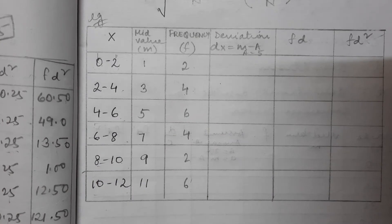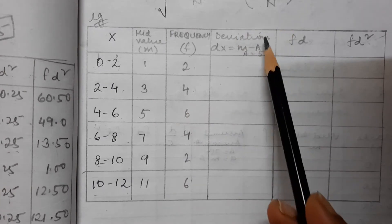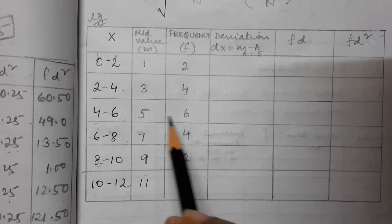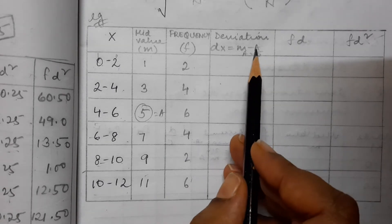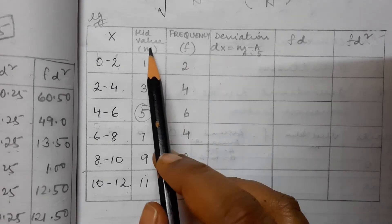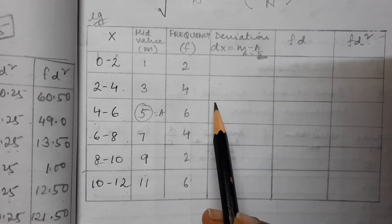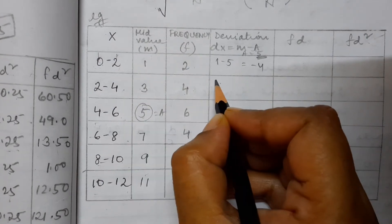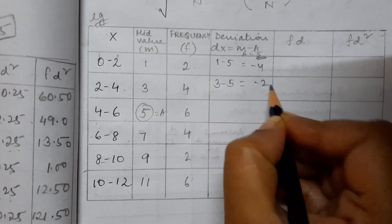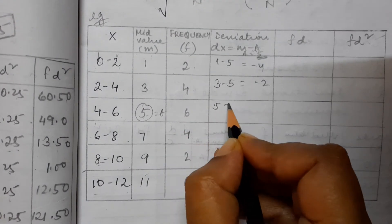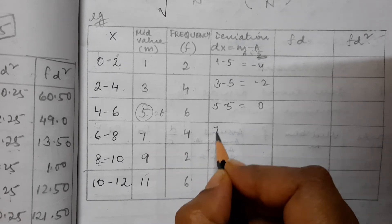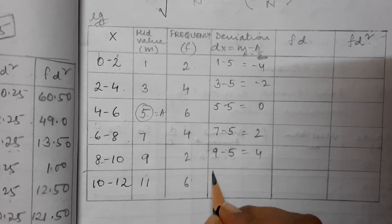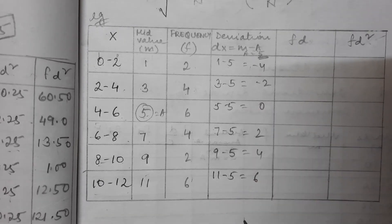After getting the mid values, for the shortcut method you assume one average. From the mid values, take one value — let's take 5 as equal to A, the assumed mean. Now calculate the deviations of m from this assumed value A = 5: 1−5 = −4, 3−5 = −2, 5−5 = 0, 7−5 = 2, 9−5 = 4, 11−5 = 6. So your deviations d are: −4, −2, 0, 2, 4, 6.